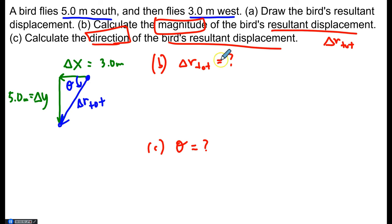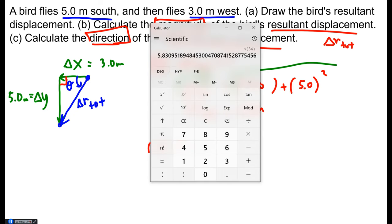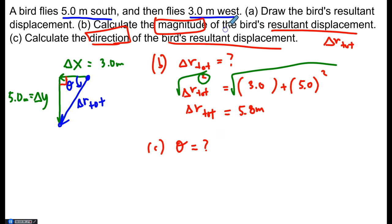For part a, we can use the Pythagorean theorem. We know that delta r total squared is equal to delta x squared plus delta y squared. This is a right triangle because x and y are perpendicular. So plug in the two sides, three and five, and solve. Don't forget to square root both sides to get rid of this square here. And what do we get? We get 5.8 meters. Notice we round to two sig figs because that's how many sig figs the givens have.